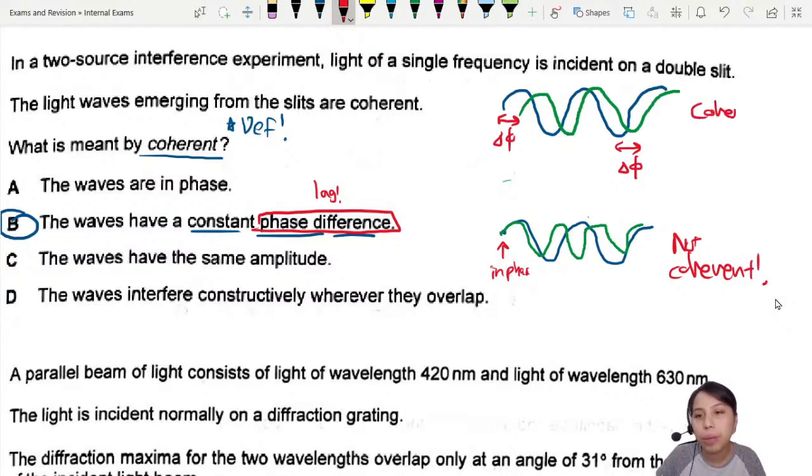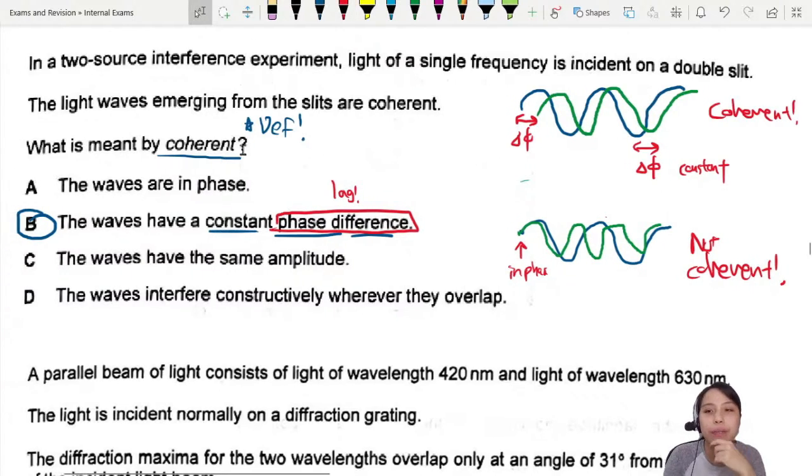Here is, on top, coherent. Because they have the same phase difference. Constant. Okay. That's this question. Need to know the definition.